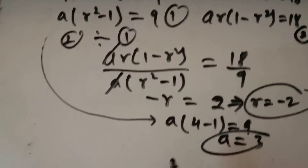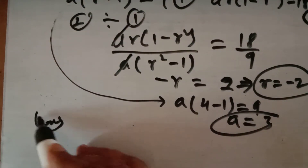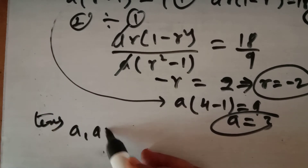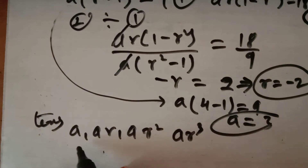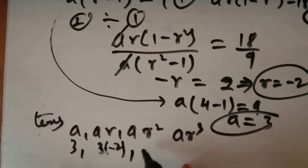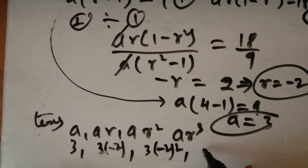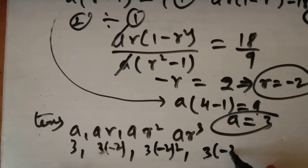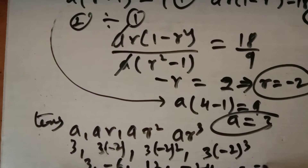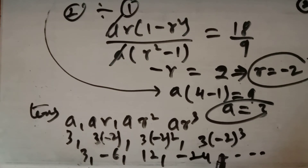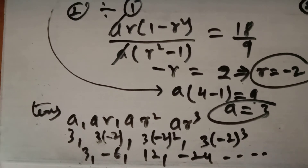With a = 3 and r = -2, the first four terms are: a = 3, ar = -6, ar² = 12, ar³ = -24. So the geometric progression is 3, -6, 12, -24. These are the first four terms of this geometric progression.